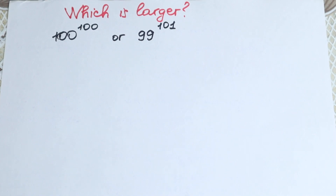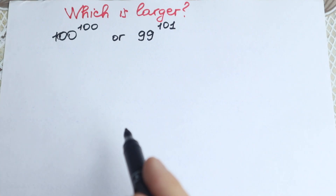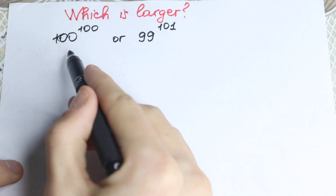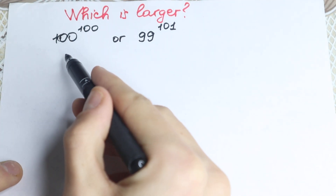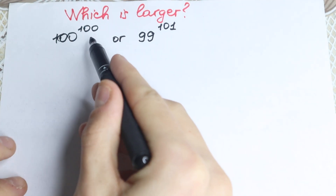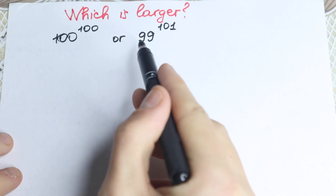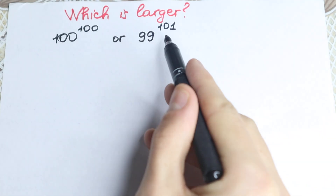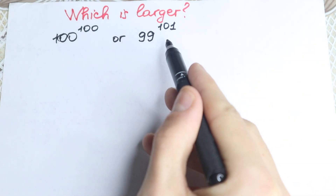Hello everyone, happy to see you on my math channel. In this video we are going to solve this interesting algebra problem. Which one is larger? On the left hand side we have 100 to the power 100 and on the right hand side we have 99 to the power 101.